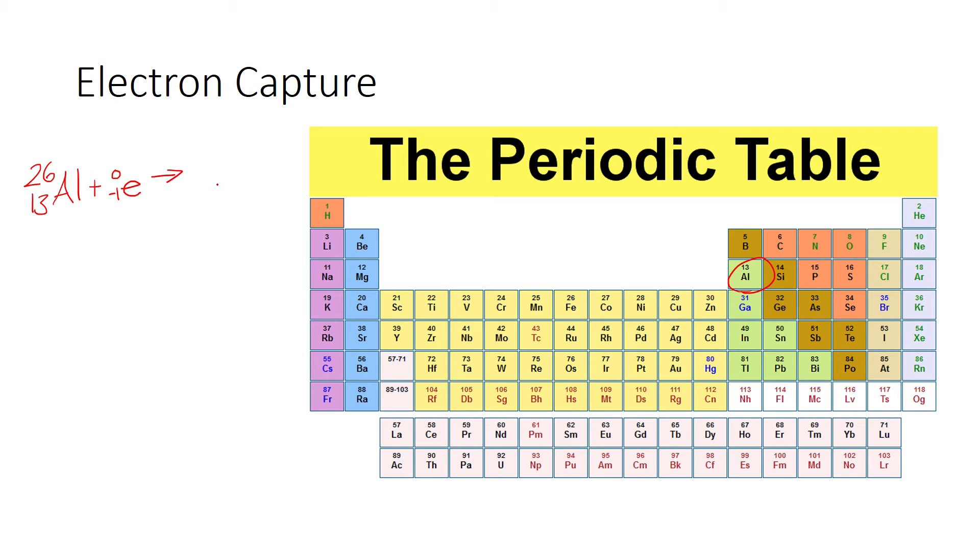So the results are pretty easy. See, 26 plus 0 is 26. 13 and negative 1 is 12. As you can see, the atomic number is reduced by 1. That's the point of electron capture. There are too many protons in there. You gotta turn that sucker into a neutron.